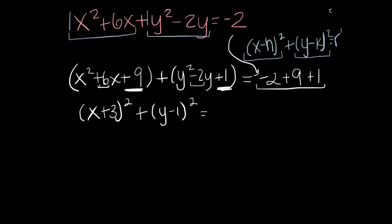So then what's this? This is... 8. Bless you, Mrs. Strager. 8. So, the center of my circle is negative 3, 1. And my radius is the square root of 8. Which is 2 root 2.